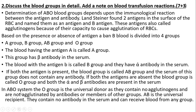In the ABO system, the O group is the universal donor as they contain no agglutinogens and are not agglutinated by antibodies of members of other groups. AB is the universal recipient — they contain no antibody in the serum and can receive blood from any group.